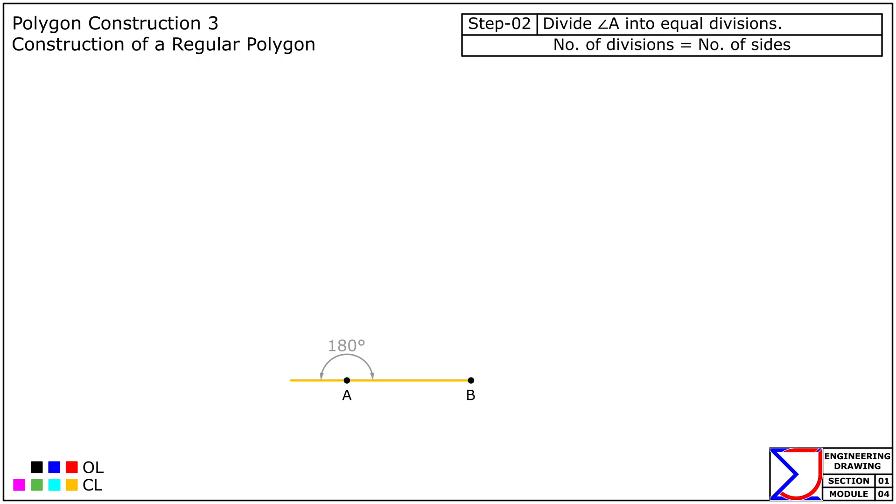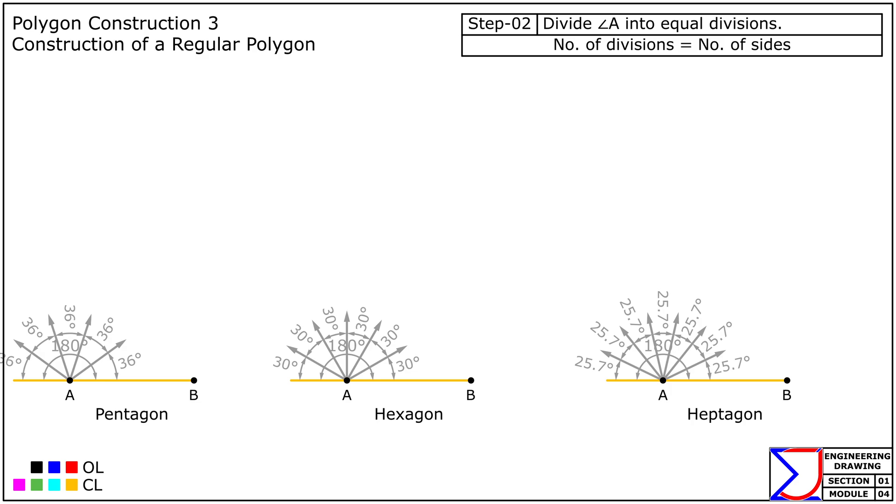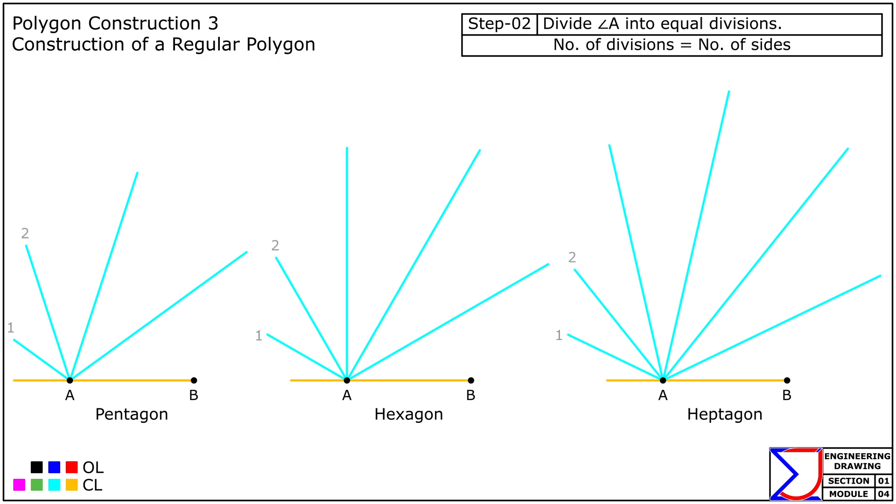Now divide it into the same number of equal divisions as the number of sides: 5 for the pentagon, 6 for the hexagon, and 7 for the heptagon. Next, starting from point B, use radius AB to cut arcs on each line successively to get points C, D, E, and so on.